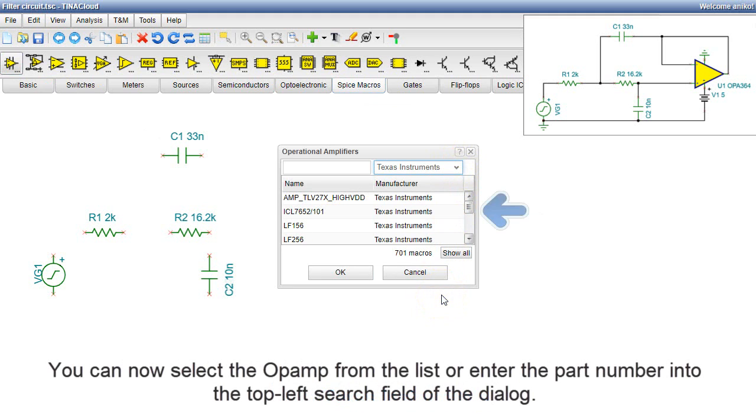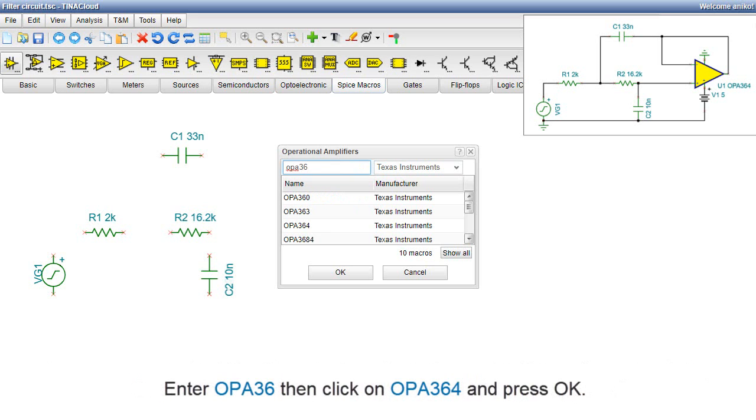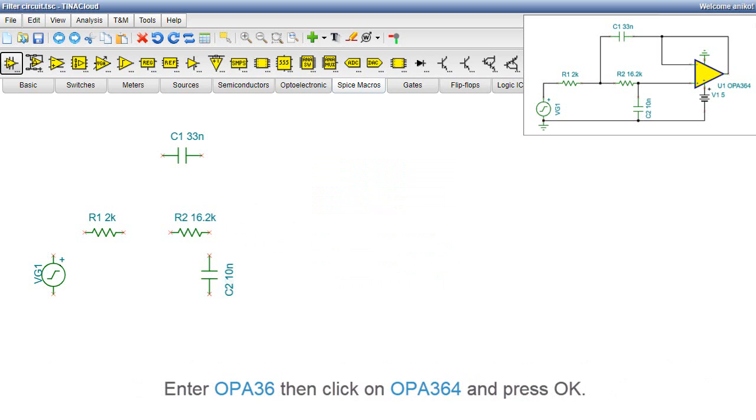You can now select the Op Amp from the list, or enter the part number into the top-left search field of the dialog. Depending on what you enter, several ICs may appear. Enter OPA36, then click on OPA364, and press OK.